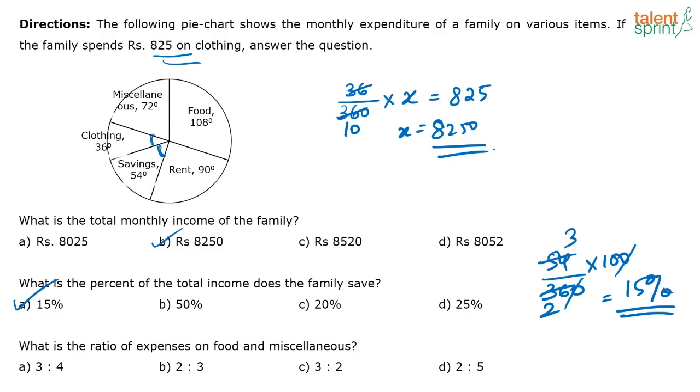Next question. What is the ratio of expenses on food to miscellaneous? Food is 108 degrees, miscellaneous is 72 degrees. So the ratio between food and miscellaneous is 108 and 72. The required ratio is 108 divided by 72, or that is equal to 3 by 2. 12 will go in both, so this will be 9 by 6, and that is equal to 3 by 2. That is 3 is to 2.